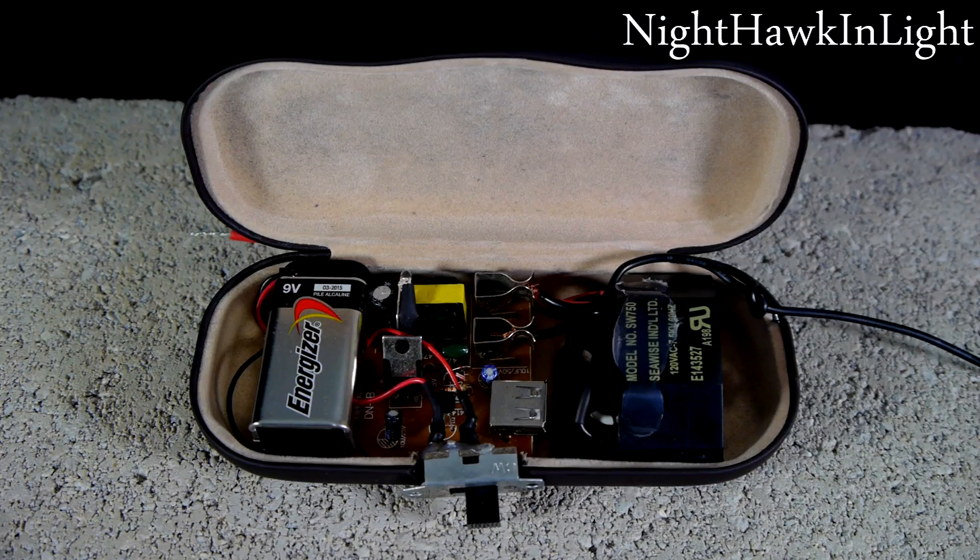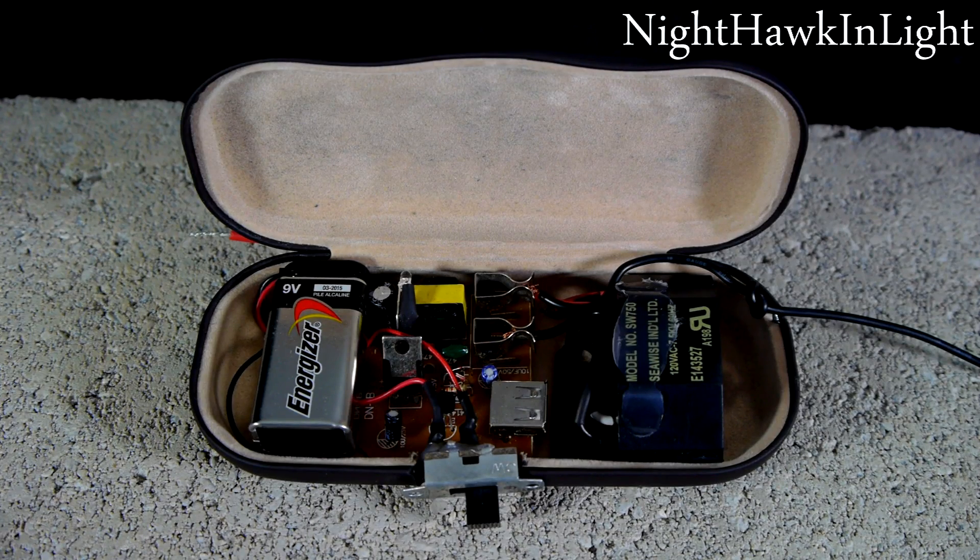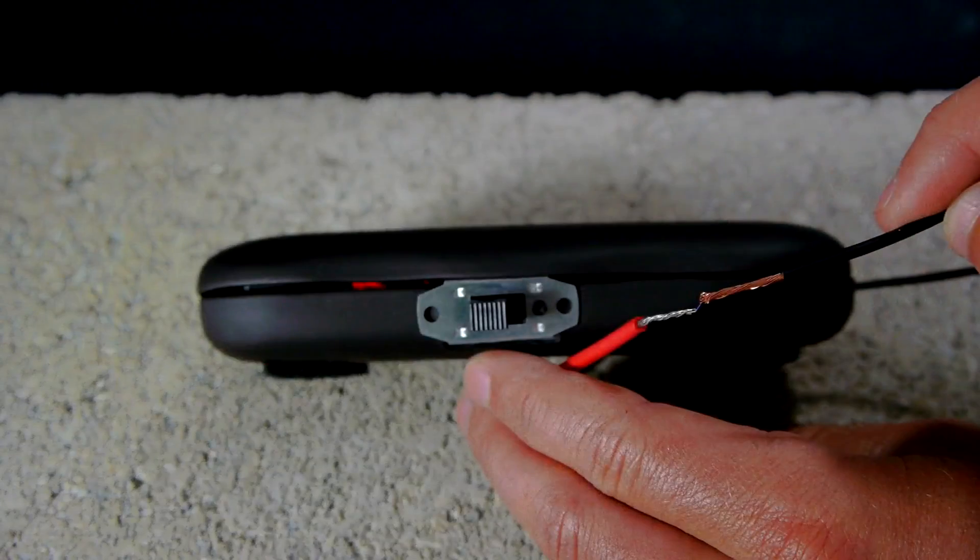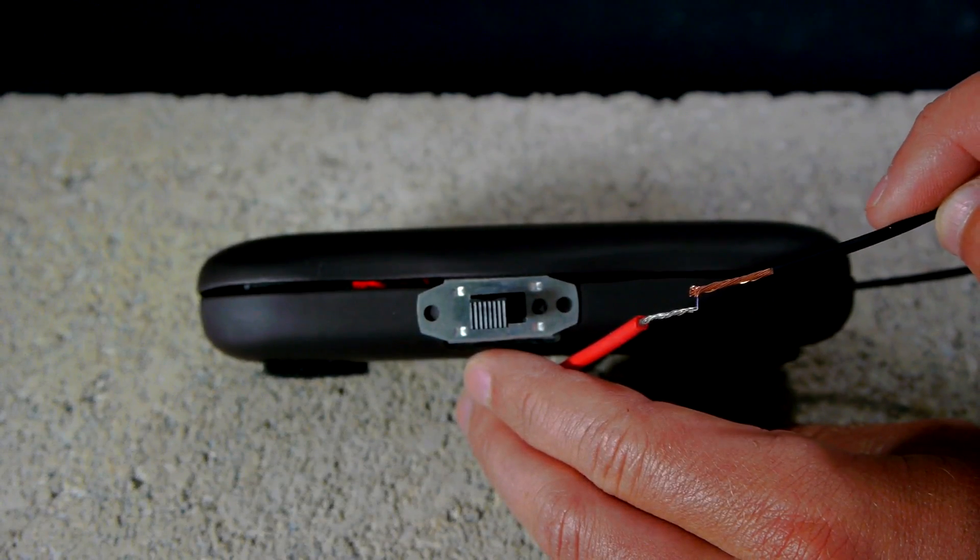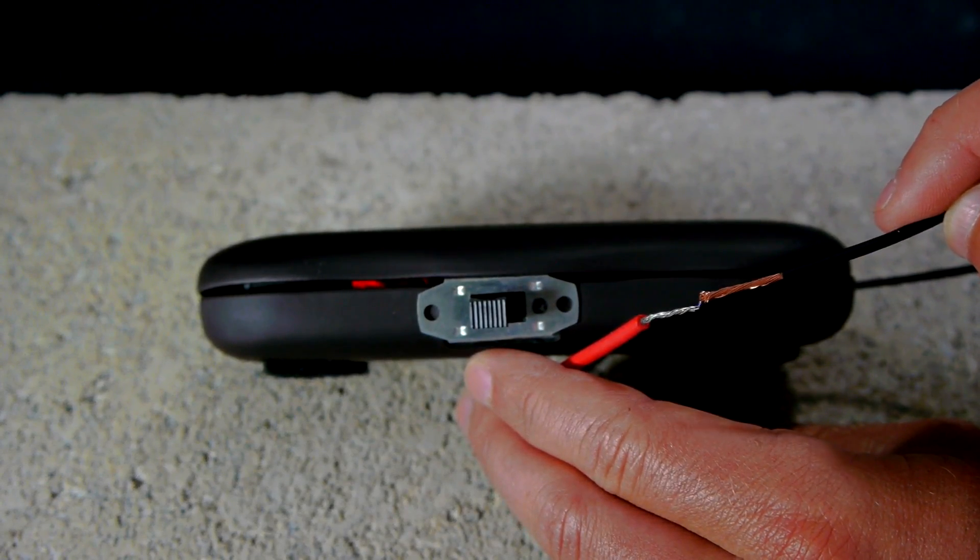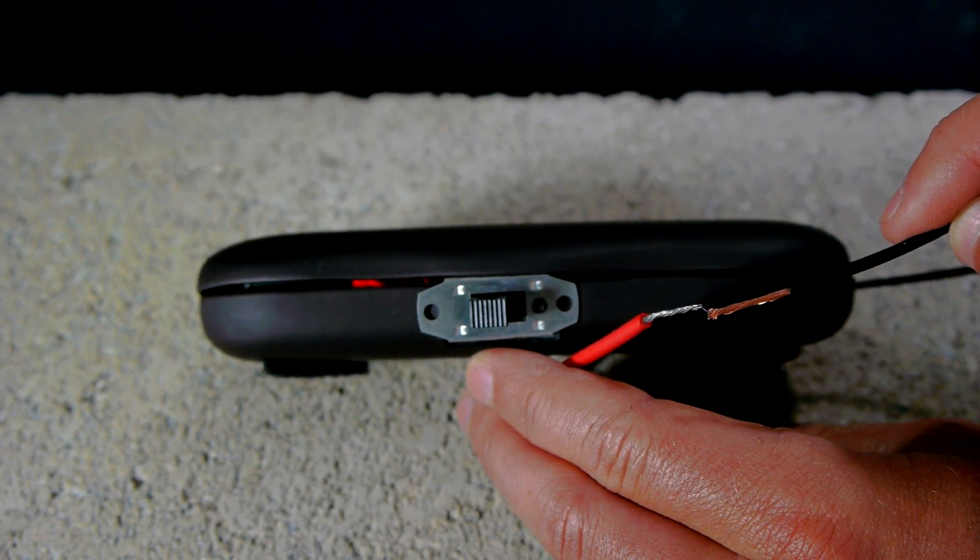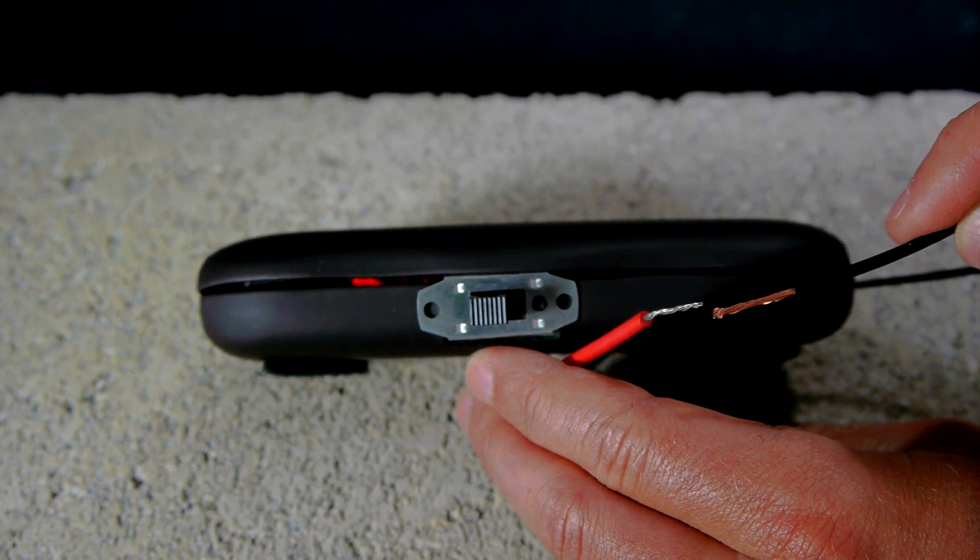In this video I'll be showing how to create a high voltage electron generator that fits neatly inside of a glasses case. This device pulls in electrons from the surroundings through one wire and feeds them out of another so that anything touching the second wire is electrified with a static charge.